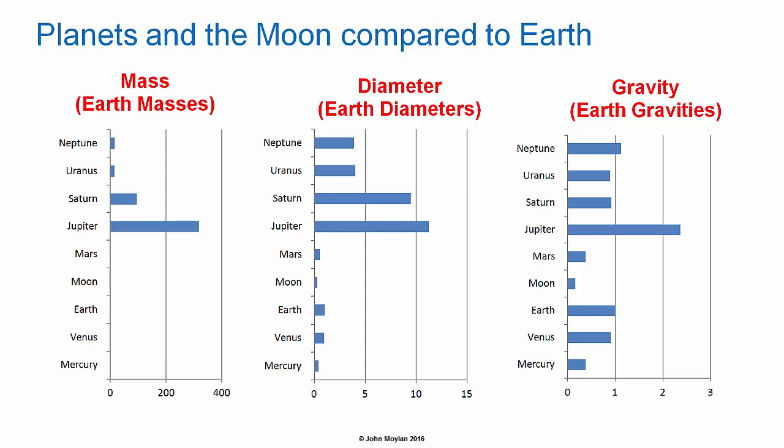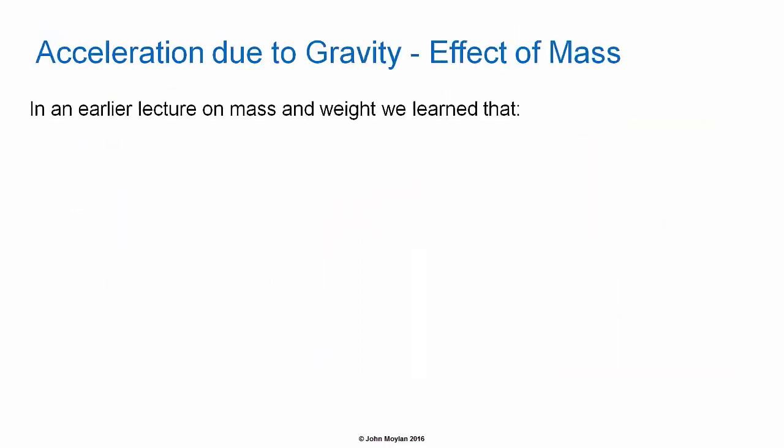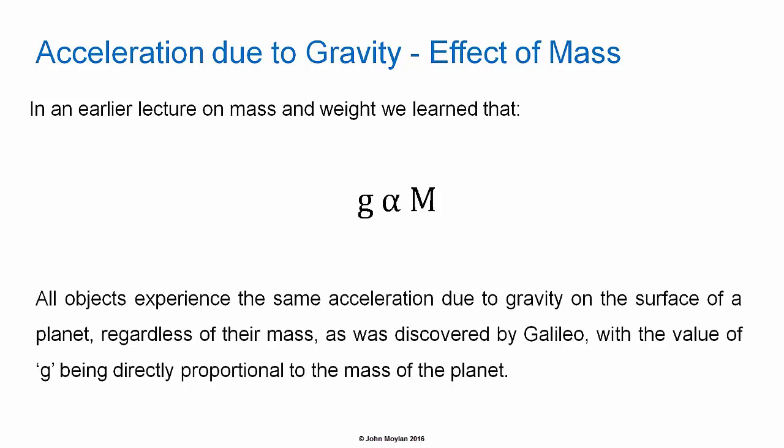As we've learned in earlier lectures, both the radius — the distance from the centre of mass — and the mass of the central body have an effect on the gravitational field or acceleration due to gravity at a particular point in space. In the lecture on mass and weight we learned that g is proportional to m, where g is acceleration due to gravity in meters per second squared and m is the mass of the body exerting the gravitational field in kilograms. So acceleration due to gravity is directly proportional to the mass exerting the gravitational field, and all objects experience the same acceleration due to gravity on the surface of a planet regardless of their mass.